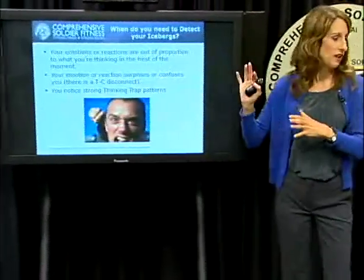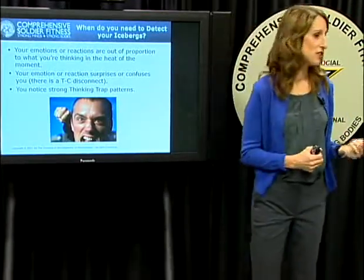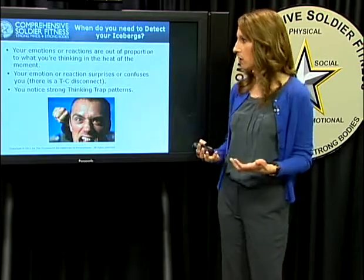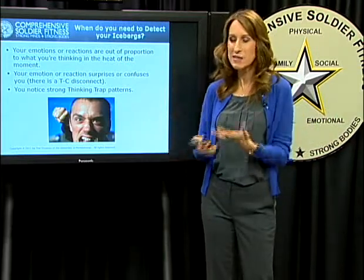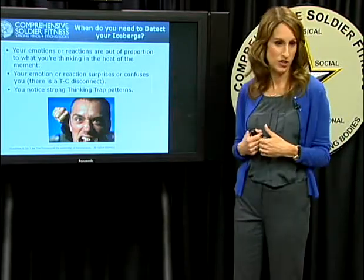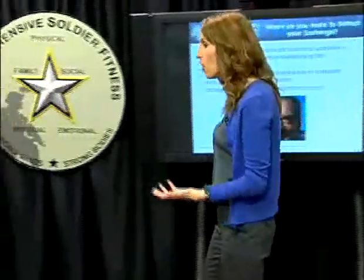So those are the big three indicators. If your emotions or reactions seem out of proportion to your heat-of-the-moment thought, use the skill of detecting the iceberg. If you're confused — there's a TC disconnect — stop and ask yourself questions to detect the iceberg. And third, if you notice you lean toward one of those six thinking traps frequently, that's a signal to understand what's pushing you that way.